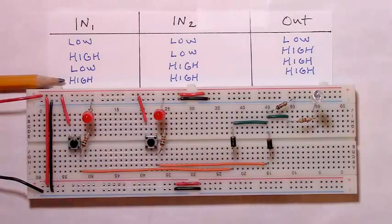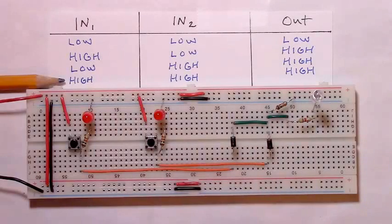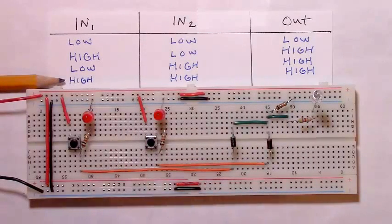This tells us that this circuit does in fact mirror the behavior in the digital truth table associated with an OR gate. Let's look at the schematic and build the circuit.